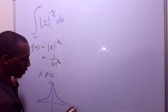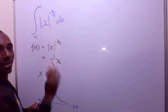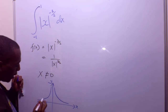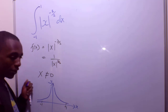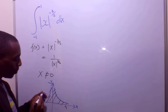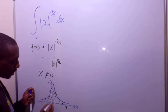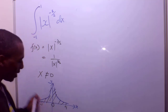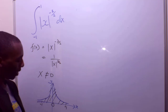This is the y-axis and this is the x-axis. What this integral basically says is that we have to find the area from negative 1 to positive 1 for this function. The problem is this function is not defined at x equals 0, so how do we actually find this area?